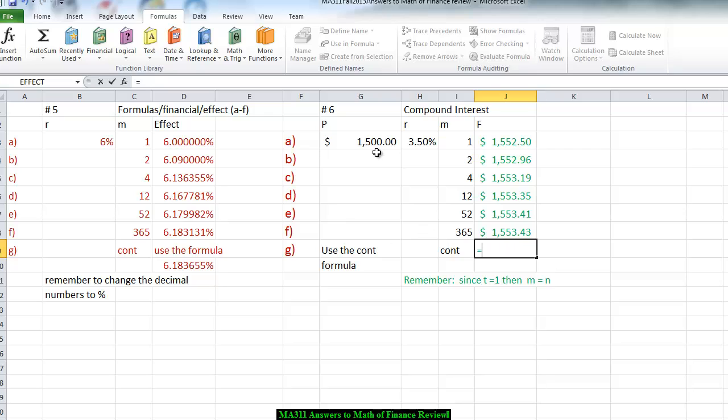Now, for continuously, we're going to take the principal times, and here we're going to go again to our exponent button, which is EXP. We have the interest rate because we're doing this again for exactly one year. We don't have to do it times T, and therefore, you notice in this particular situation, continuously and daily will give us exactly the same particular value.